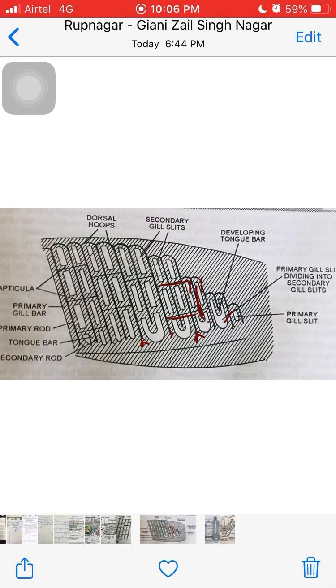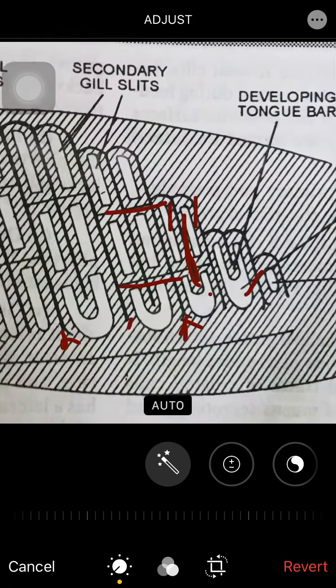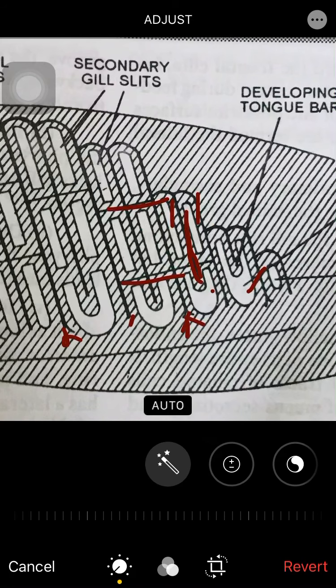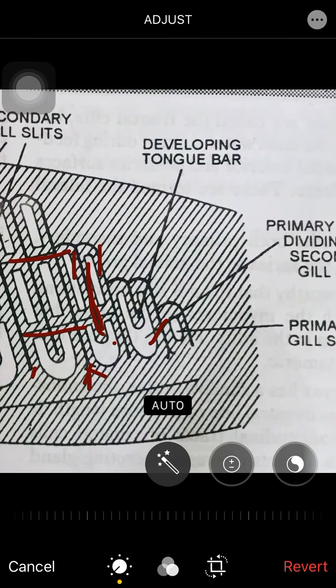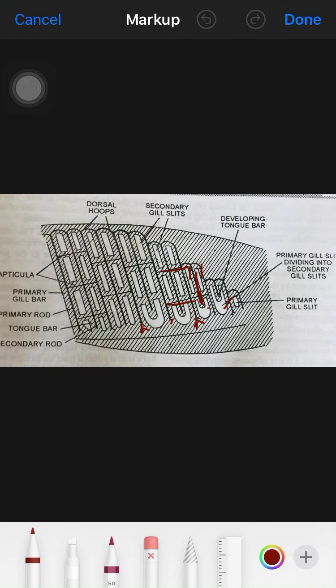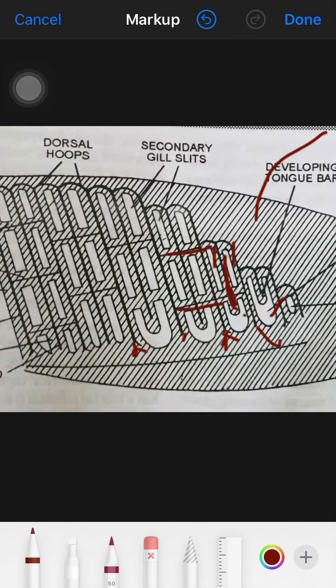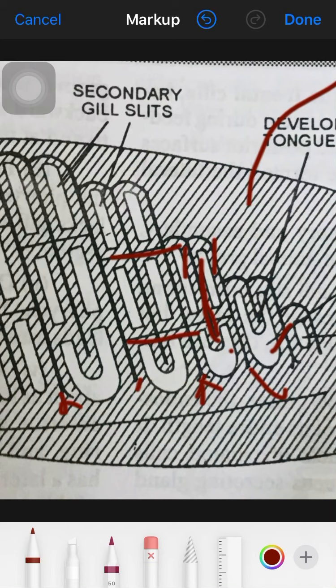The secondary gill bars develop as a tongue-like downgrowth called tongue bars. The tongue bar develops from the dorsal wall of the primary gill slits and divides each of the primary into secondary gill slits.